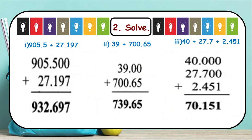Then next we have solve. Solve means we have to do the given operation and find the answer — it may be addition or subtraction. Here the questions are given based on addition. We have 905.5 plus 27.197.